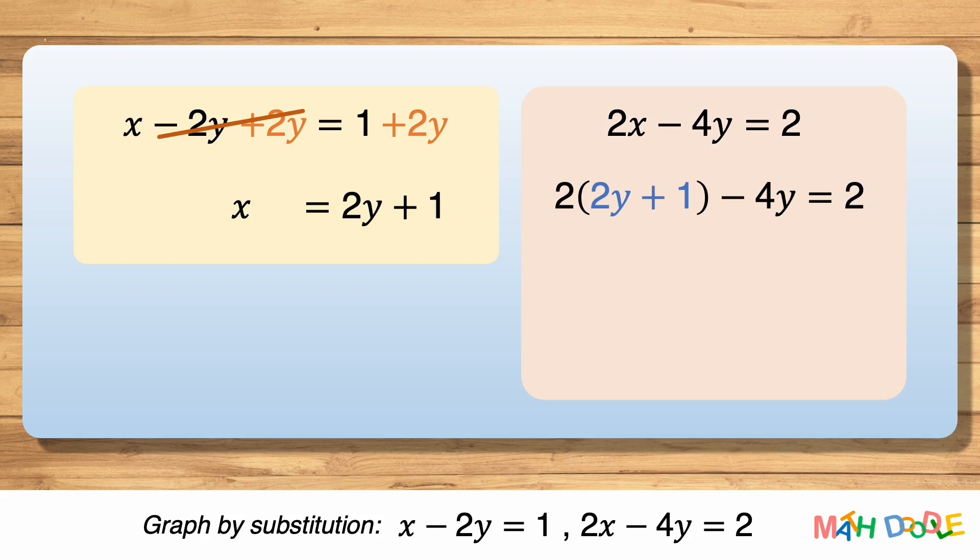Then, this can be simplified to 4y plus 2 minus 4y equals 2. And it can be further simplified to 2 equals 2.